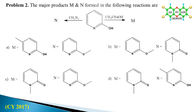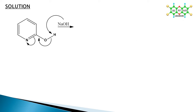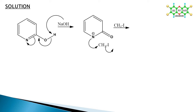The answer for this transformation is option C. NaOH abstracts the proton from the hydroxy group and transfers the negative charge onto nitrogen. The negatively charged nitrogen easily reacts with iodomethane, placing the CH3 group at the nitrogen position, forming N-methylpyridine.